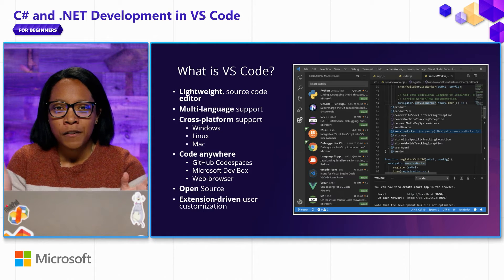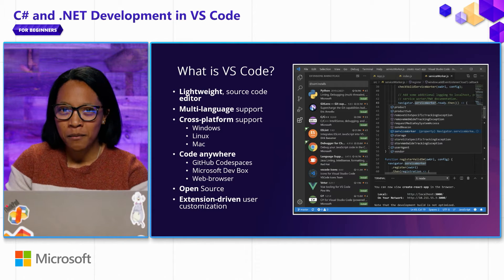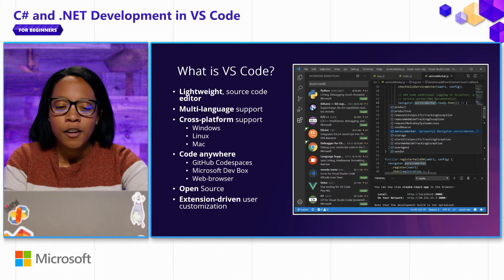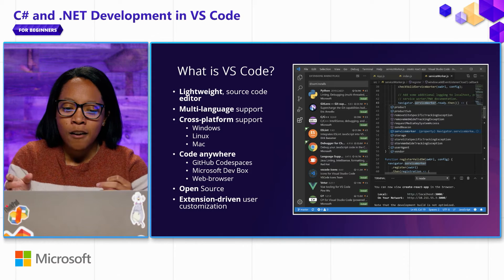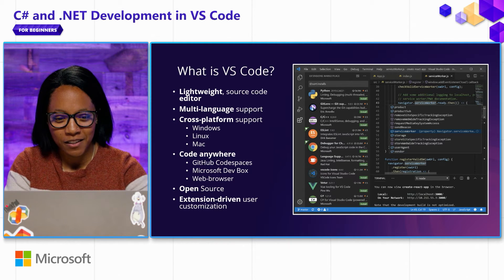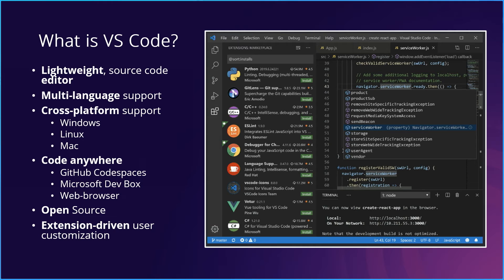At its core, VS Code is very extension-driven. Extensions are the bread and butter of user customization and creating that ideal development environment. These are add-ons you can install that expand the existing feature set or add new features to your VS Code experience. For example, there's a Python extension, a C++ extension, a GitHub one — all of these expand on the basic source code editor and introduce the ability to write new languages or add new themes. And C# DevKit is of course one of those extensions, which we're going to hone in on.